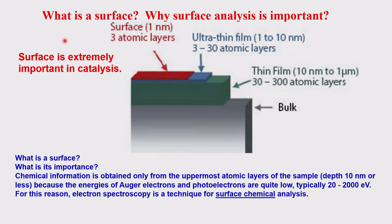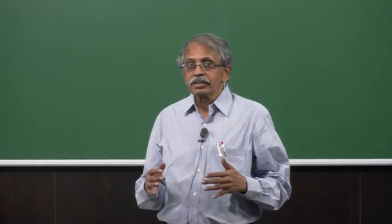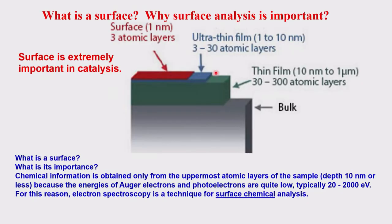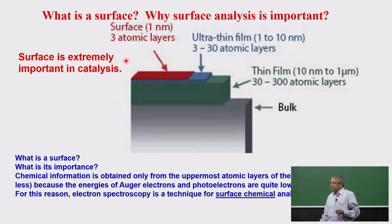That brings a question: what is the surface and why is surface analysis important? Surface analysis is important when things occur at the surface, such as heterogeneous catalysis reactions. Looking at the slide, you can see layers shown in different colors — red, blue, green, gray — representing layers of the surface. The topmost surface is around 1 to 3 nanometers, just a few atomic layers.